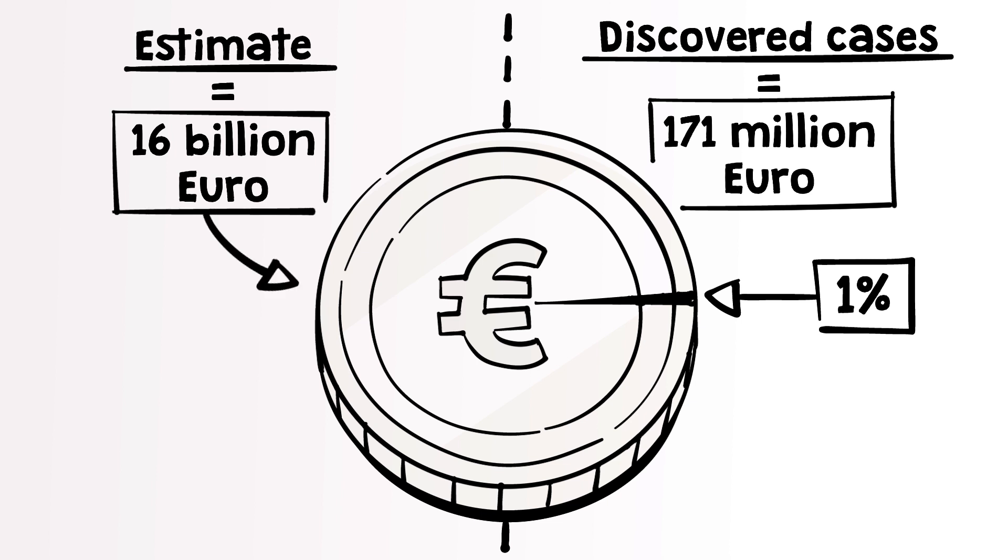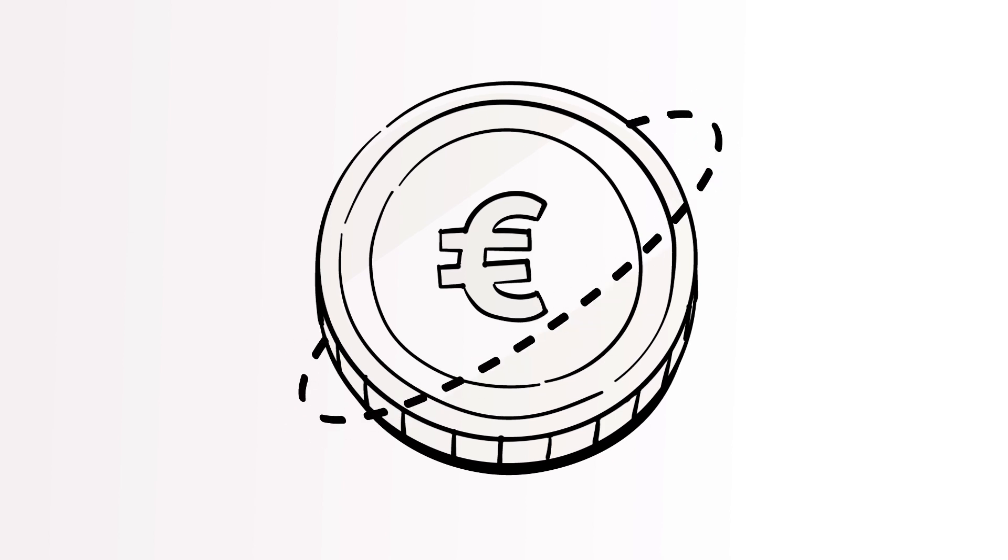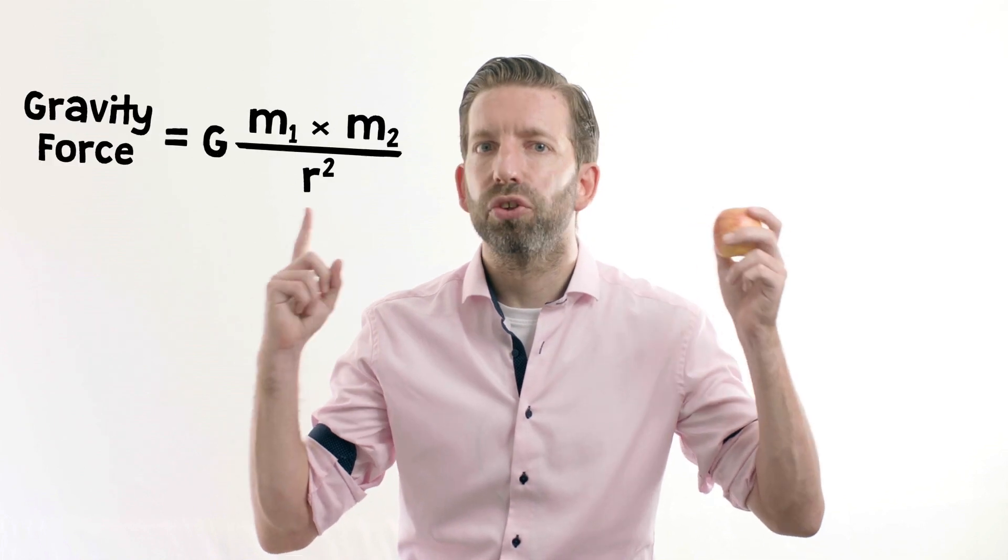We approach the estimation very differently. We use a so-called gravity model to estimate the amount of money laundering across the world. The gravity model comes from the original gravity equation in physics discovered by Isaac Newton. With this formula we know exactly what happens if I stop holding this apple.